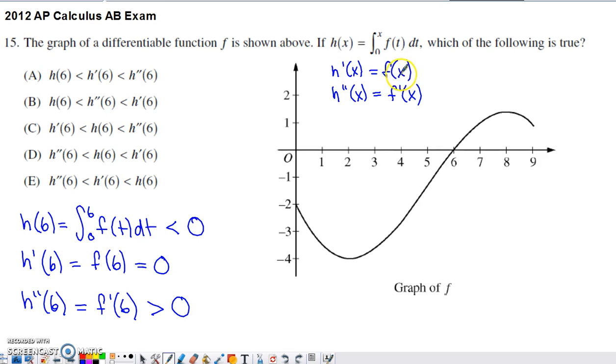You get that h prime of x is equal to f of x, and then if you need h double prime as well, which we do need here to figure out what h double prime of 6 is, taking the derivative of both sides of this equation gives us h double prime of x is equal to f prime of x.